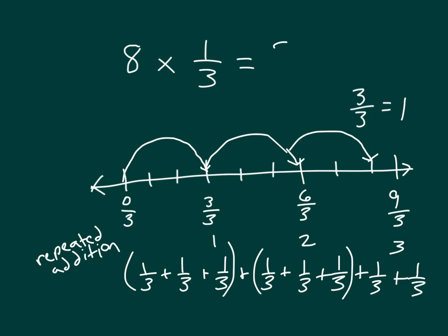8 times 1/3 is equal to 8 thirds. I first traveled 3 thirds to reach 1 whole, then 6 thirds to reach 2 wholes, and then traveled the rest of the way to get to 8 times 1/3 — traveling 3 thirds, another 3 thirds, then 1/3 and another 1/3. So I got to 8 thirds, which also equals 2 wholes and 2 thirds.